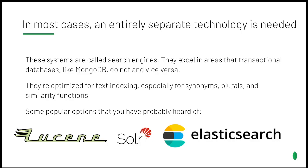Apache Lucene is one of the most powerful and widely used search engines at the time of this video's recording. And since it's open source, it underpins various other solutions like Apache Solr, Elasticsearch, and Index Tank.